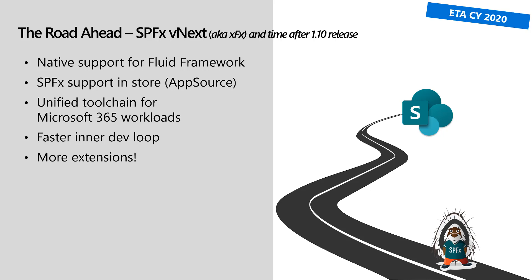As part of the Ignite presentations we talked about SharePoint Framework vNext, and what does that mean? It means that we are introducing a unified toolchain for Microsoft 365 workloads. In our Ignite messaging it was called Yo Microsoft 365, allowing you to create solutions that can be exposed in Microsoft Teams, Office add-ins, Outlook Web Access, or as a SharePoint Framework web part — or in all of them.